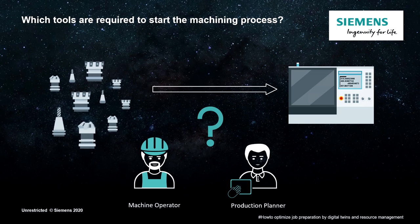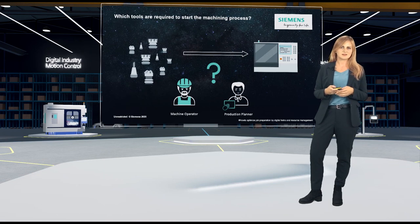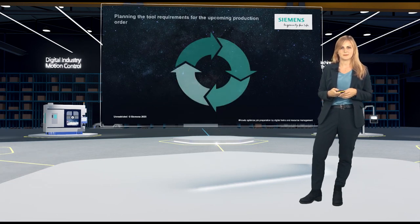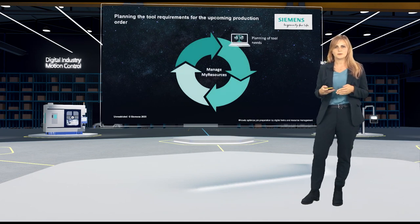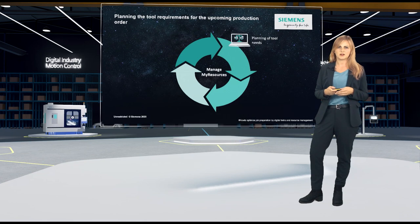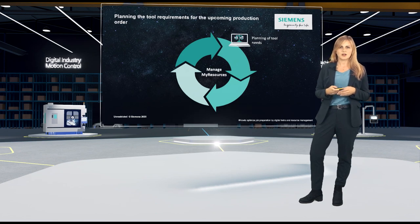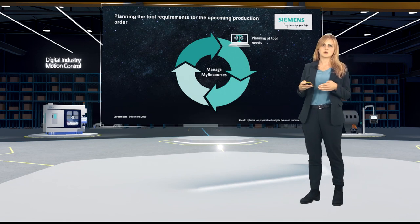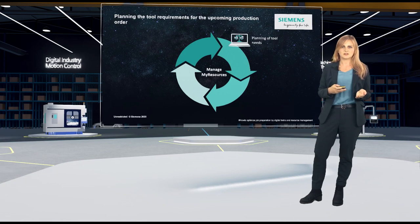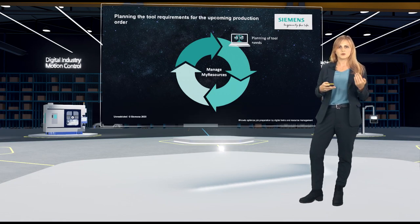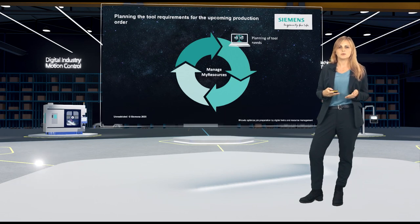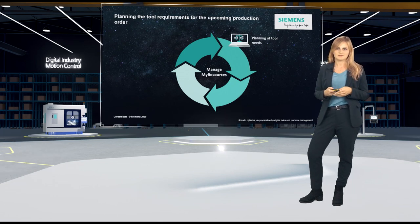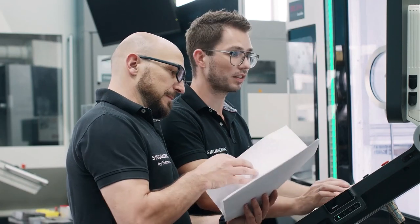Let's now assume that the NC program has been transferred directly to the machine and the machine operator has got a first overview. Now, the next thing he wants to know is which tools he needs for this NC program and where he can get them from. He asks the production planner. The planning of tool requirements is one possible entry into the entire tool cycle, which is supported by the software ManageMyResources tools. Let's have a look at the details of this step. To produce the new workpiece, the tool requirements for this job must be determined so that the machine operator's question can be answered.